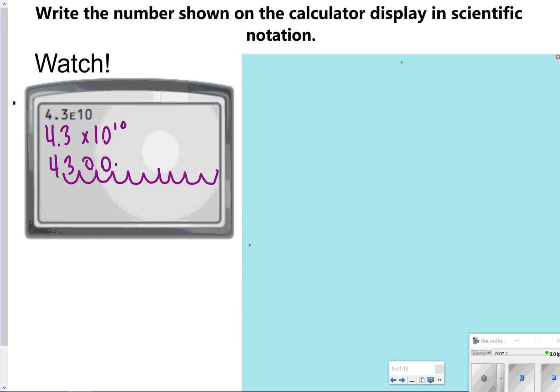So we're going to have 9 zeros. So my answer would be this big number. 43 billion would be my answer for that one.